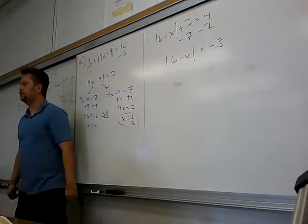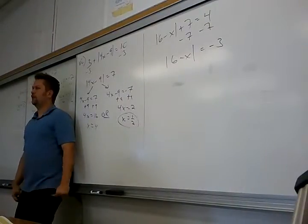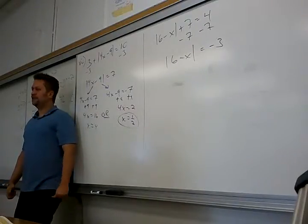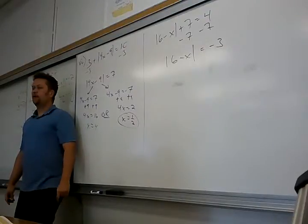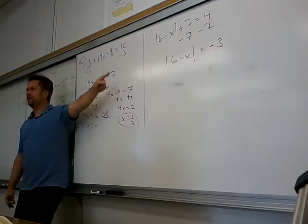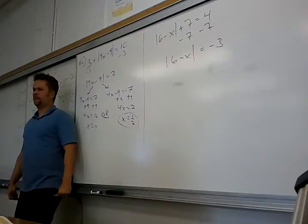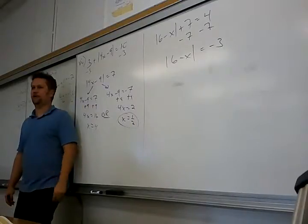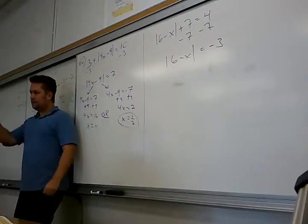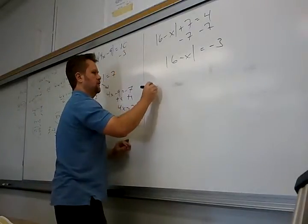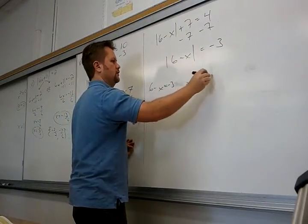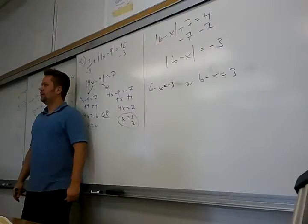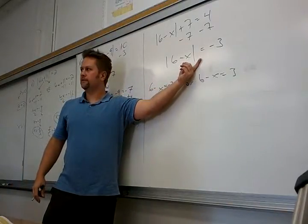So you get the absolute value of 6 minus x equals negative 3. Now if you keep going you're going to get two answers and they both will suck. They will both not work. That's a little evil. But notice what that says. What does that equation say? The absolute value of something is negative. Right there I should stop. I have no more work to do. I already know that's a bogus freaking equation. If you keep going you will get answers. So if you keep going you say 6 minus x equals negative 3 or 6 minus x equals change the sign. I get my answers and neither one of them will work. Because right there I know it's bogus.